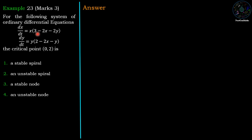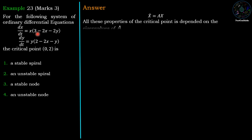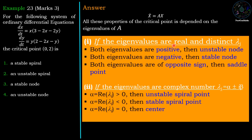First, we recall the characteristics of the critical point of the differential equation x' = Ax, which is a linear differential equation where A is a matrix. The nature of the critical point depends on the eigenvalues of matrix A. If both eigenvalues are positive, real, and distinct, it is an unstable node. If both are negative, real, and distinct, it is a stable node. If the eigenvalues are of opposite sign, the point is a saddle point.